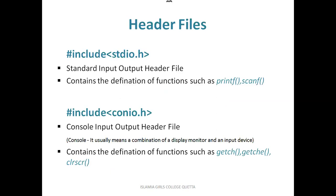Now we will discuss some header files which are commonly used in C programs. First is the standard input-output header file, stdio.h. As the name suggests, this file contains the functions which are used for standard input and output, like printf and scanf for taking input and displaying output. So if we are using the printf or scanf function in our program, we have to write down that header file at the top.